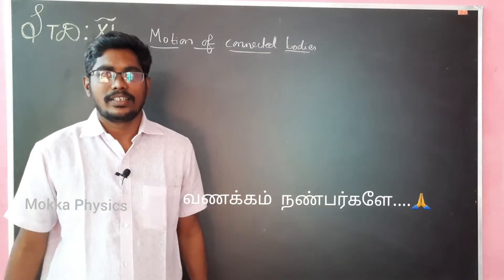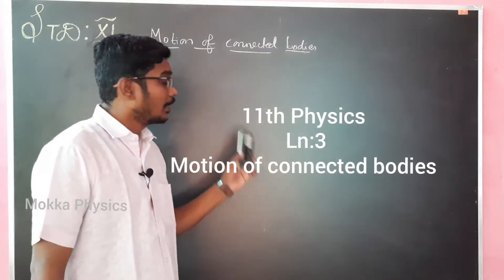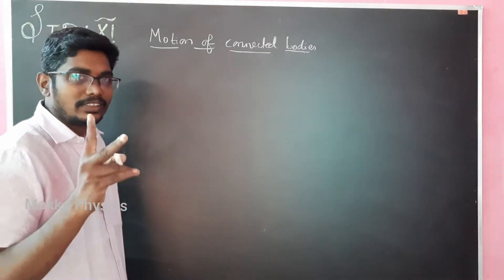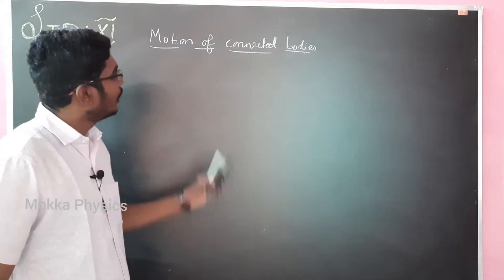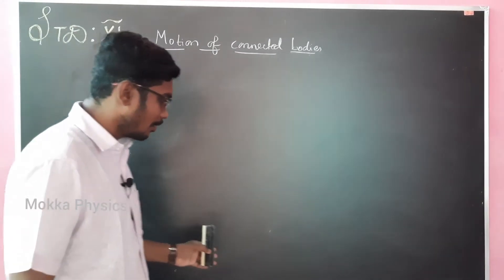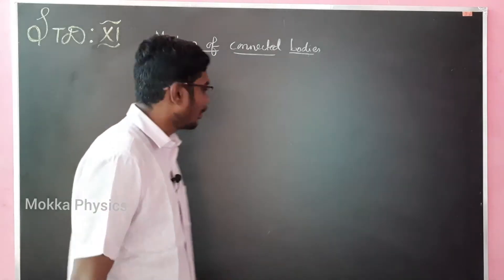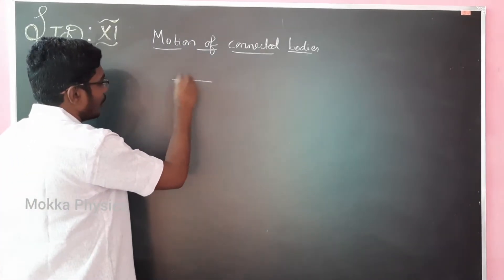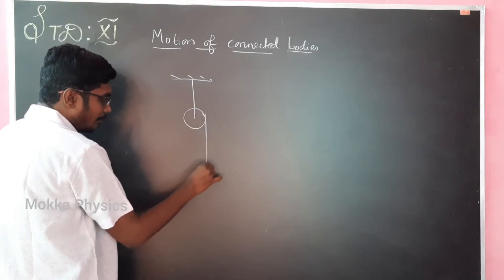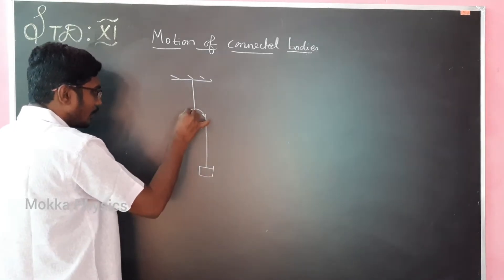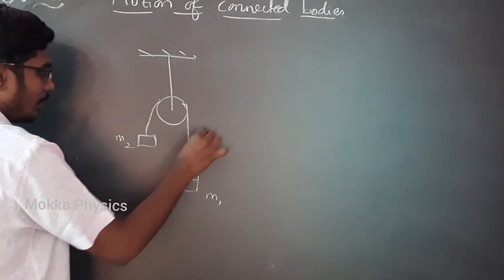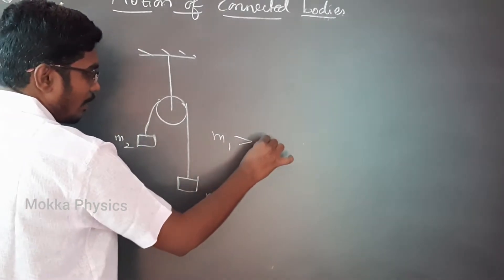Hello everyone. I am going to show you a concept in the lesson — specifically the third lesson. This is actually two subdivisions: the motion of a connected body. Let's take a look at vertical motion. This is a rigid support, this is a pillar. Two masses have been hung — this is m1 and this is m2.